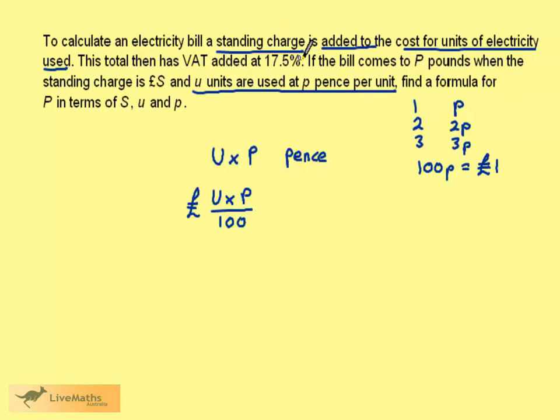Remember, to this we need to add the standing charge. The standing charge is S pounds. So S plus U times p over 100, which can be written as Up over 100, is the charge without the VAT.